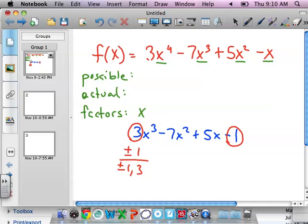That will give me a total of four possible factors. We could do 1 over 1, and we can do 1 over 3. And of course, their negatives. So plus and minus 1 over 1 is 1. And plus and minus 1 over 3 is 1 third.